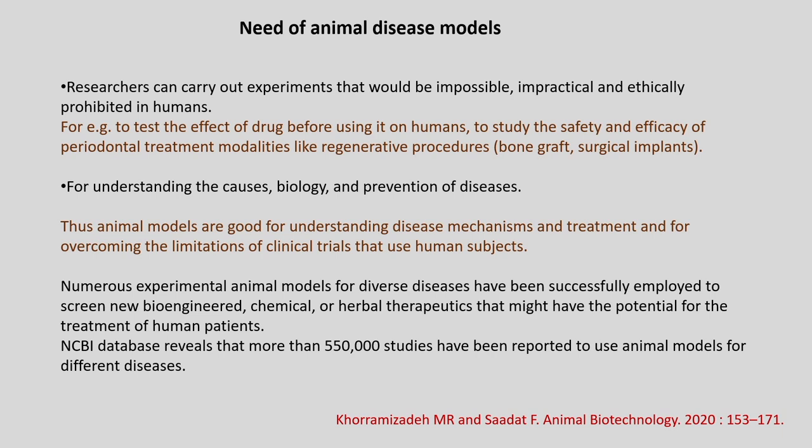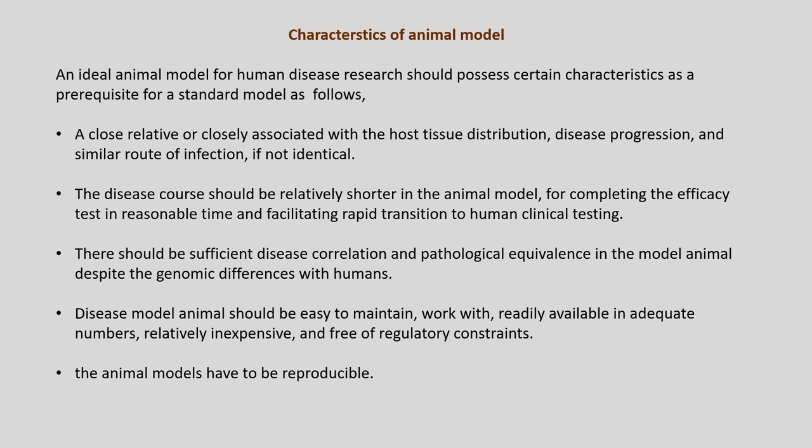The NCBI database reveals more than 550,000 studies reported for use of animal models for different diseases. Now, what are the characteristics of a good animal model? An ideal animal model for human disease research should possess certain characteristics as prerequisites for a standard model. First, a close relationship with the host, with similar tissue distribution, disease progression and route of infection, if not identical.